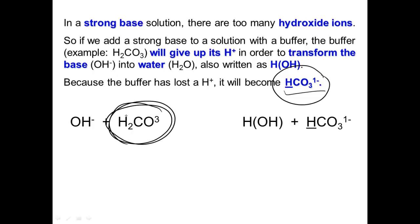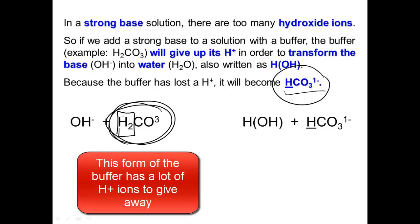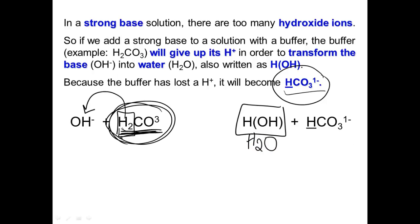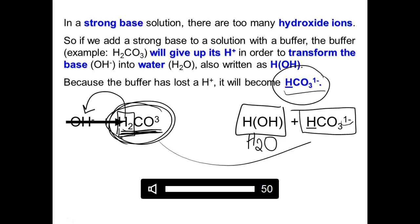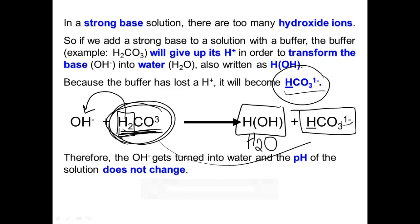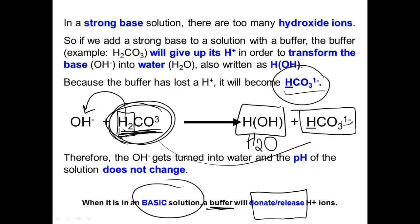So here in this case, we're using the form of the buffer that has the most hydrogen ions. It has a lot of hydrogen ions to give away to the hydroxide ion. And that hydrogen ion and hydroxide ion will turn into water. And you'll notice that the H2CO3, because it's lost one hydrogen ion, becomes HCO3⁻, and now it's got a one negative. It's lost one positive hydrogen ion and is now one more negative than it used to be. So there's different forms of every single buffer. If you have a buffer in a basic solution, it gives away hydrogen ions to turn the hydroxide ions into water. So buffers can donate or release hydrogen ions in a basic solution.